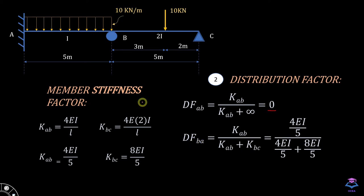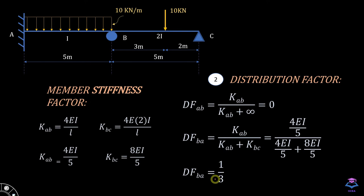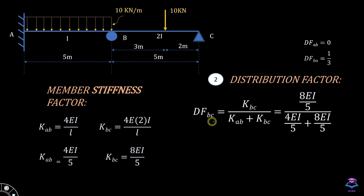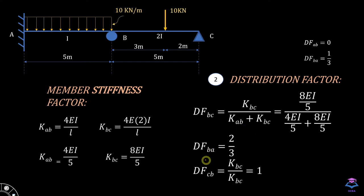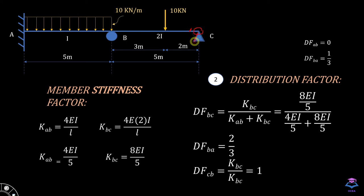DFBA is equal to K_AB divided by the total stiffness factor about joint B, that is K_AB divided by (K_AB + K_BC), which comes out to be 1/3. Similarly, DFBC is equal to K_BC divided by the total stiffness at joint B, which is (K_AB + K_BC). At joint C, the distribution factor is equal to K_BC divided by K_BC, since the hinge does not provide any rotational stiffness, giving DFCB equal to 1.